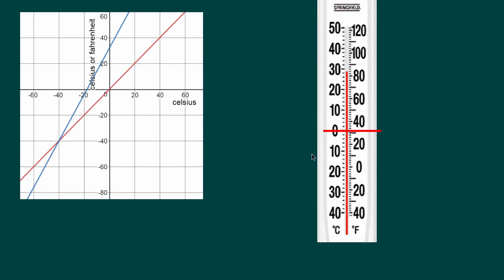Here we've got our thermometer. One side is Celsius, the other side is Fahrenheit. Most people have a thermometer that looks something like this. You'll notice that zero degrees Celsius is somewhere in the neighborhood of just over 30 degrees Fahrenheit. There is something interesting about these two scales — here is a graph of Fahrenheit and Celsius. They actually line up at minus 40 degrees. So, minus 40 degrees Celsius is equal to minus 40 degrees Fahrenheit.